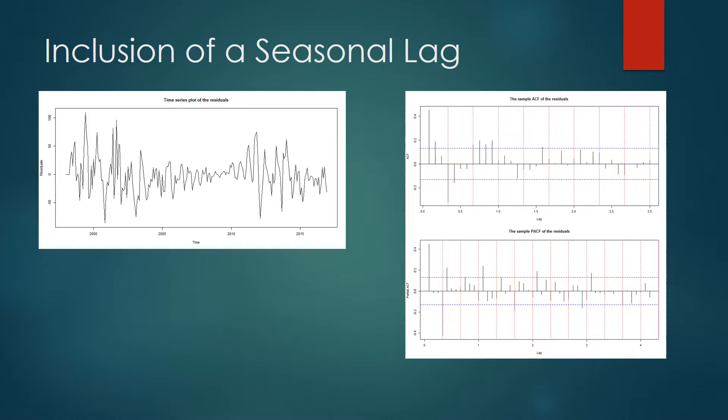In the residuals plot, after applying seasonal differencing, the changing variance becomes very apparent. The ACF plot shows possibly two significant seasonal lags. The PACF plot shows one clearly significant seasonal lag and possibly a second.